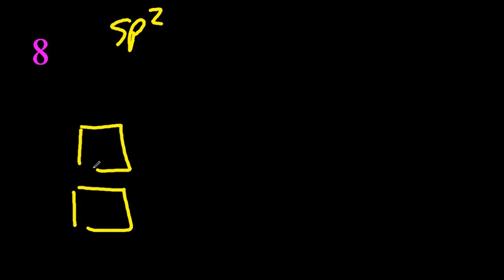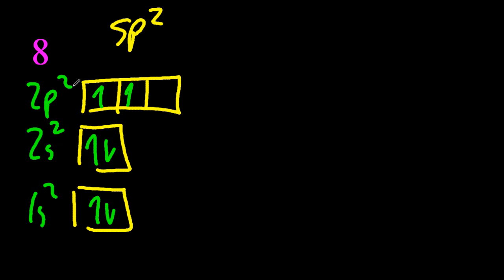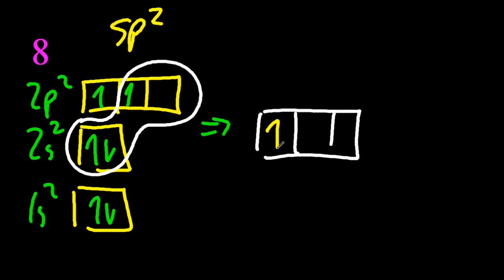For SP2, make sure you circle the right ones. You want the empty one in the 2P when you make the hybrid orbital. Take that over. That gives you one, two, three, make sigma, and the pi comes from the P that's remaining.